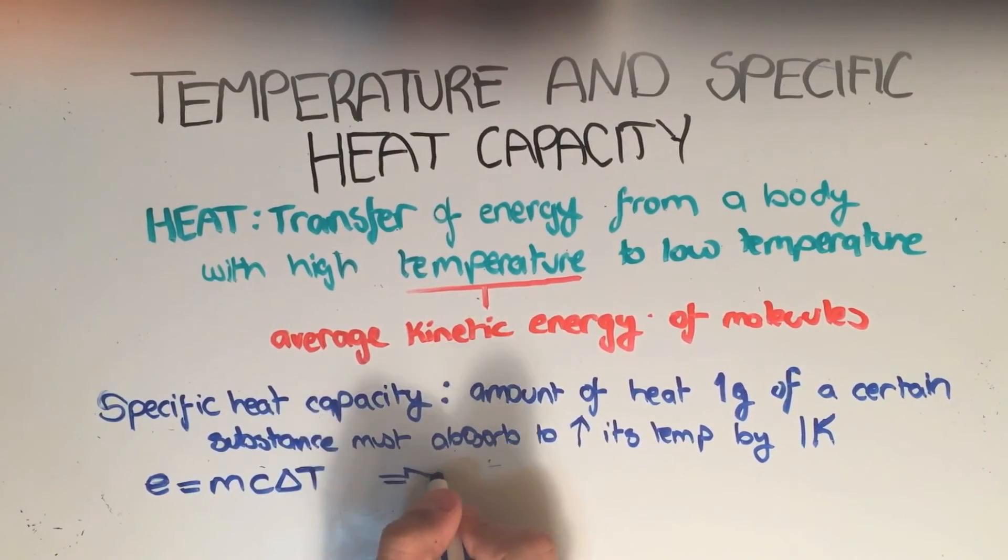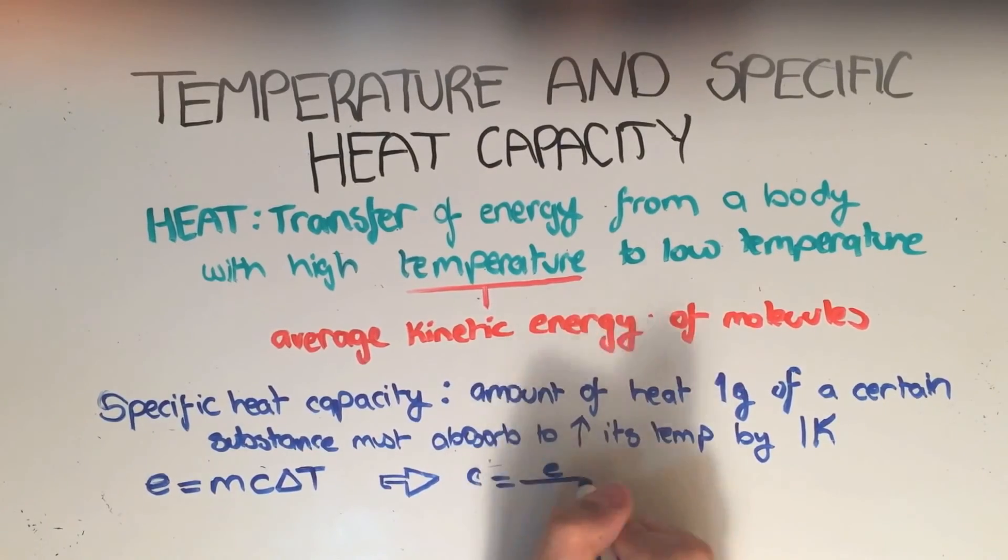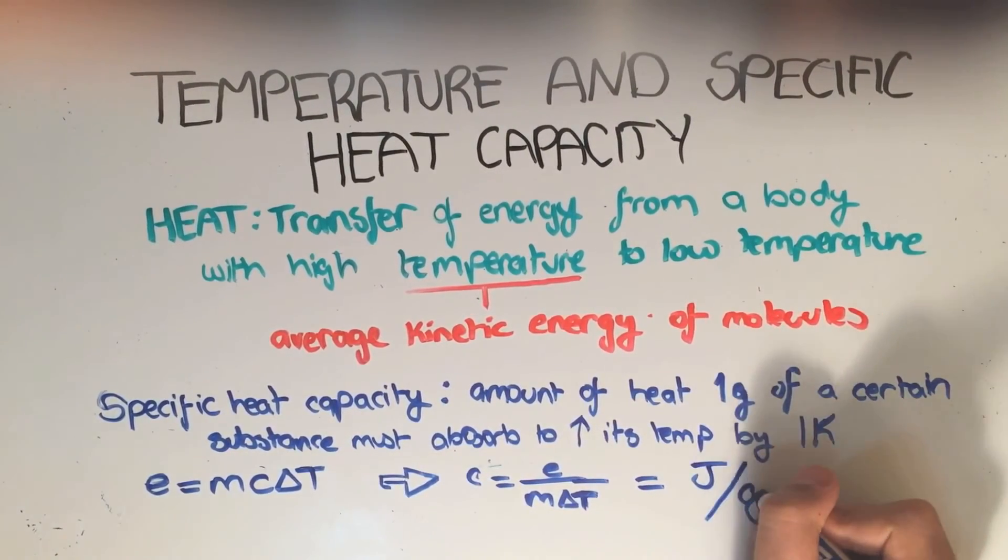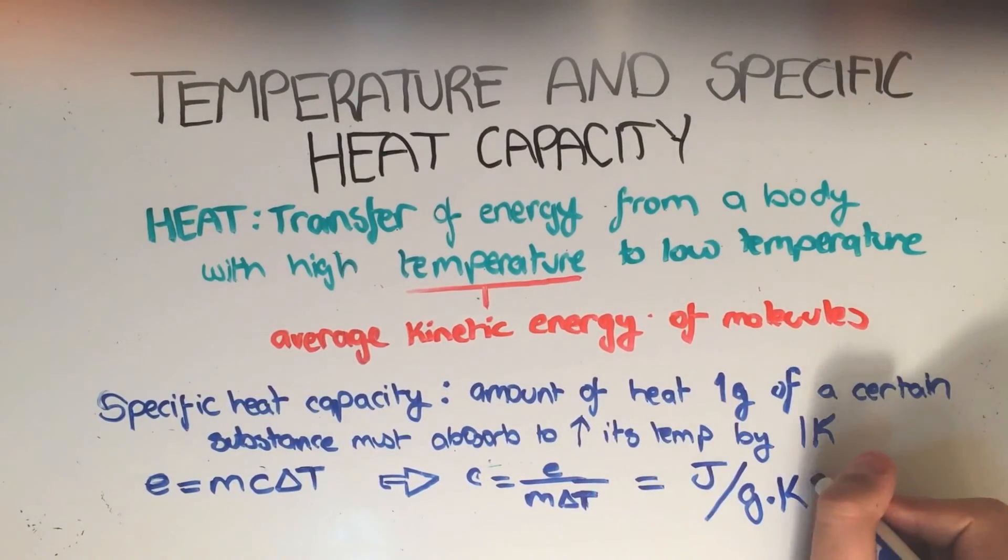This equation can be rearranged to give us C equals E over M delta T. This would give us the units of specific heat capacity, which are joules per kilogram degree Kelvin or joules per kilogram degree Celsius.